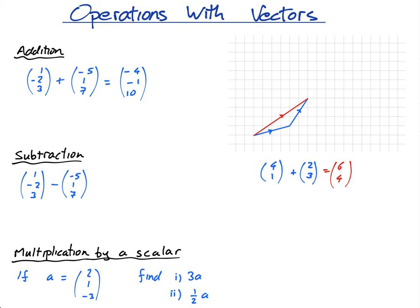Subtracting — not really any more difficult, except some people are going to make mistakes here with these minus-minuses. So it's 1 minus negative 5, which is 6 because it becomes plus. Minus 2 minus 1 is minus 3. And 3 minus 7 is negative 4. All in a vector. Done. Easy.